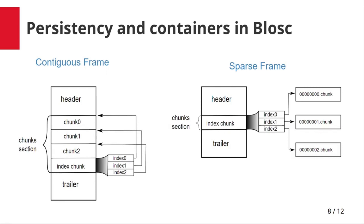With Blosc2, you can create a set of chunks called a SuperChunk. These chunks can be stored contiguously or sparsely. Besides, you can choose to store them either in memory or on disk, so that data can be stored persistently. The contiguous SuperChunk is made by a single structure which contains the data chunks, the metadata, and an index to access the data chunks.